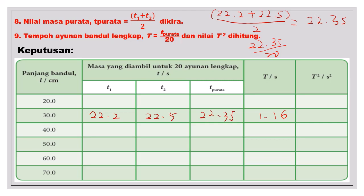Kemudian ialah T kuasa 2. T kuasa 2 maksudnya gunakan nilai T ini kuasa 2 kan. Maksudnya kamu tekan 1.16, kemudian kuasa 2 kan. Jadi di sini juga sama kamu catatkan 2 tempat perpuluhan. Kemudian anda siapkan untuk yang lain, untuk panjang 20 cm sehingga 70 cm.